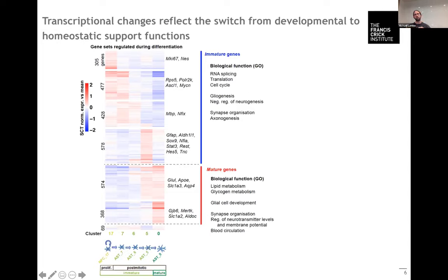These gene expression changes reflect very well the switch from developmental support functions and the still proliferative and neural stem cell-like behavior of immature astrocytes to the mature state where they have these metabolic support functions and they regulate neuronal transmission and blood circulation.